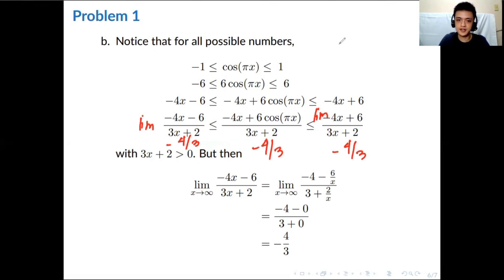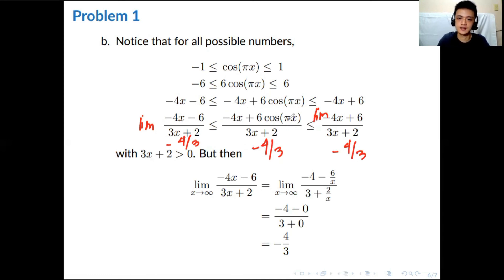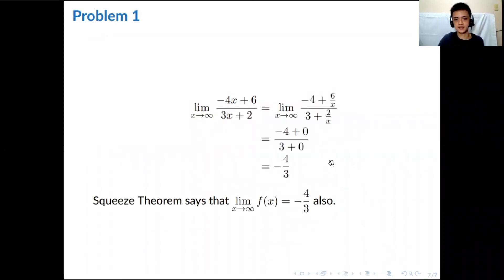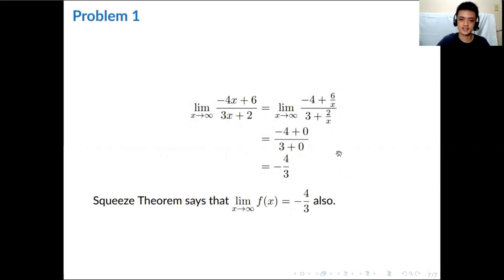This is very convenient because we found the limit by bounding the function with simpler expressions. Taking the limit of the original function directly as x approaches infinity would have been difficult due to the cosine term, so the Squeeze Theorem was the right approach. We've solved both parts (a) and (b), concluding this video. Hopefully you learned something — I'll see you in the next video. Good luck!